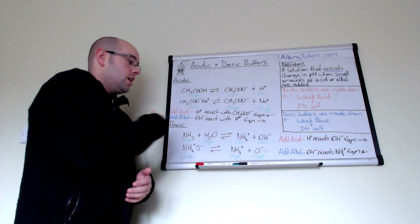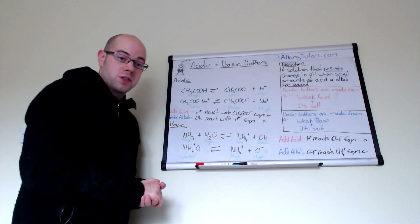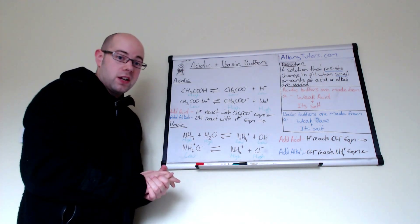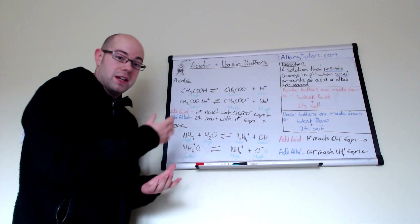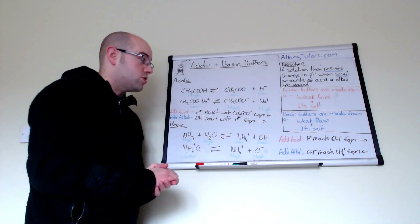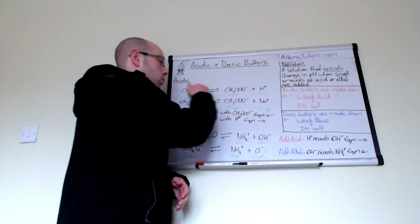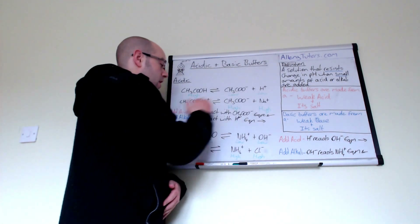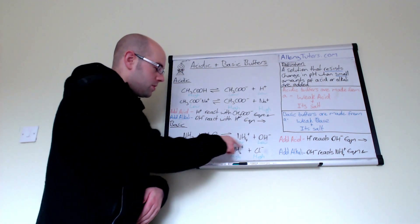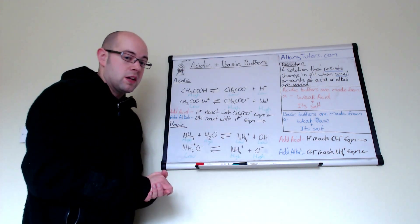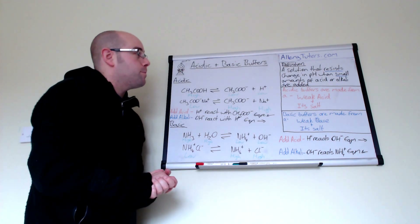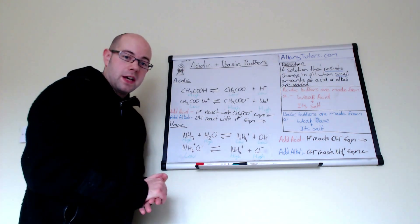That is effectively all buffers. They can be quite complicated, but think of it logically. If you write down the two equations, you can easily see how these things work — it is all to do with concentrations of your weak acid and its salt, and the weak base and its salt. Write them out separately, write out your concentrations of each species, and you should be able to work it out relatively easily. I hope that helps — bye bye!